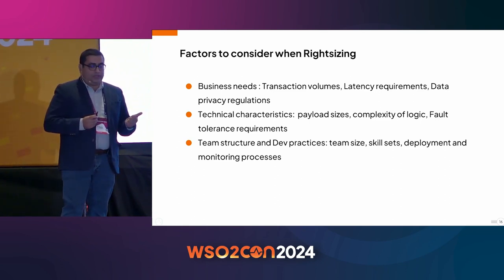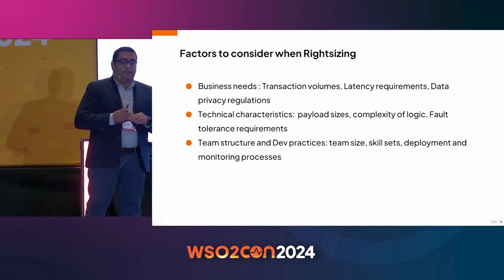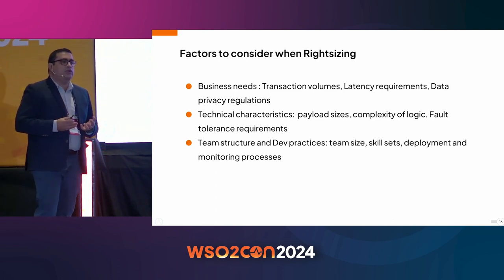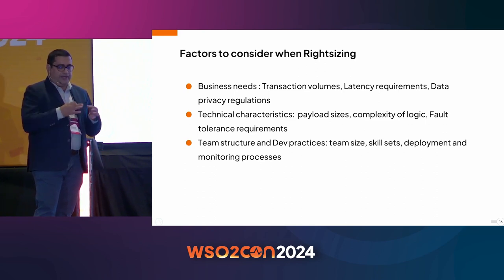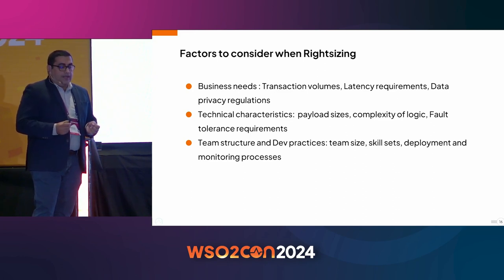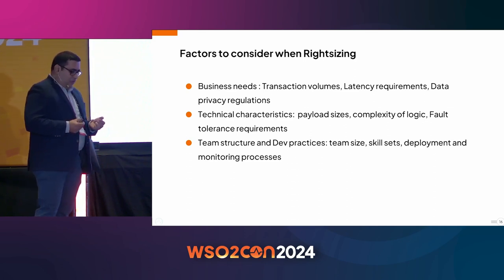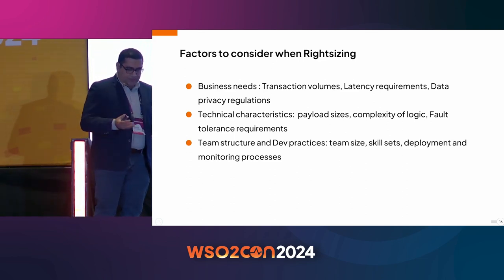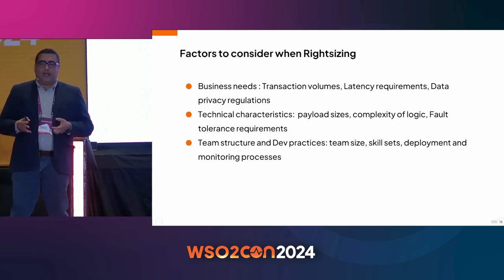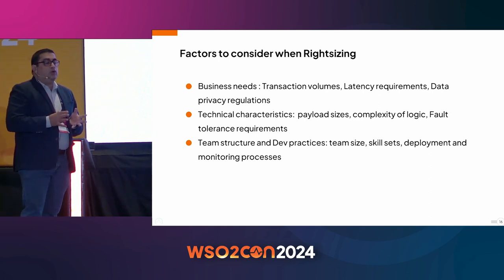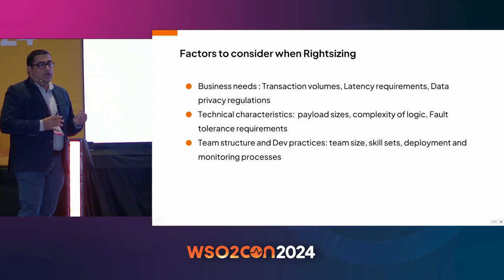Then consider technical characteristics: things like payload sizes and the complexity of the logic. When handling large payloads that require heavy transformation, that could require something to scale independently. Also think about fault tolerance — for example, in a microservices scenario, if one of the dependent services fails, what happens for the service that depends on it? How do you cater to something like that? You have to think about all these technical characteristics when picking your options.